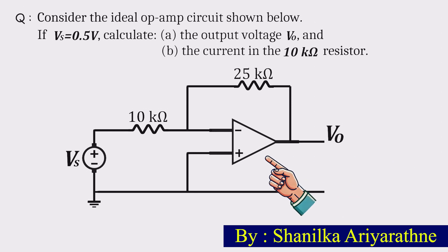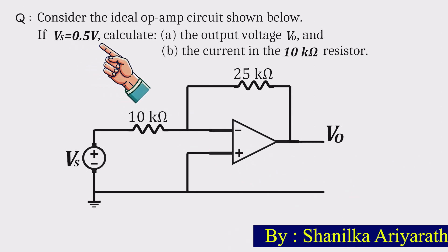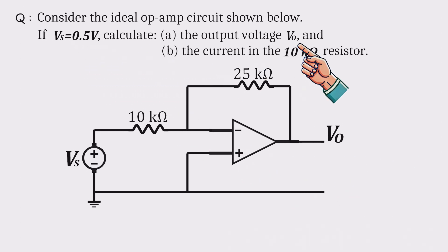We have an ideal op-amp circuit. With a 0.5 volt input, we'll find the output voltage and the current through the input resistor.